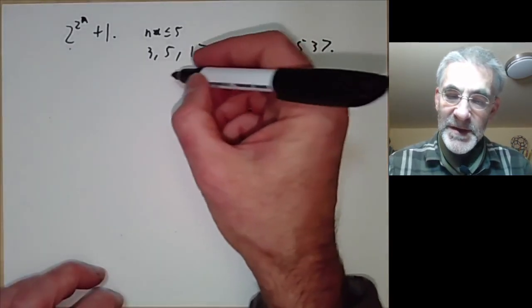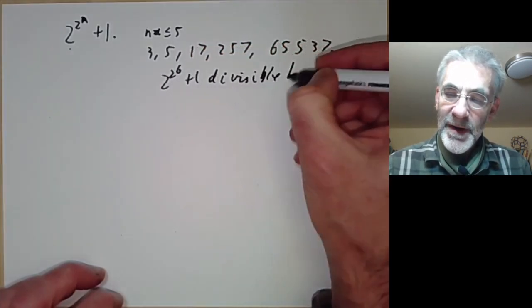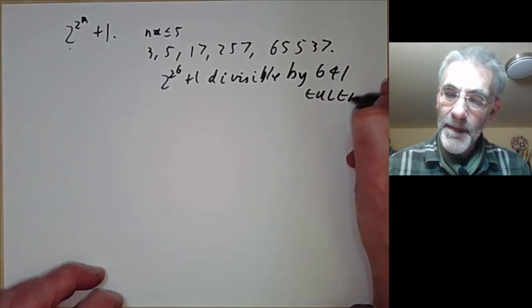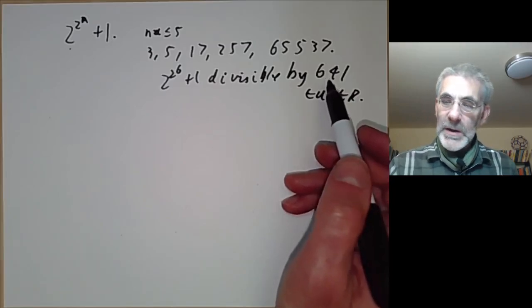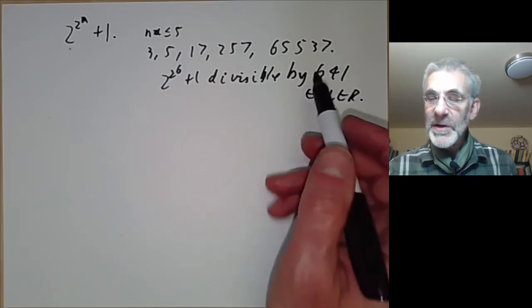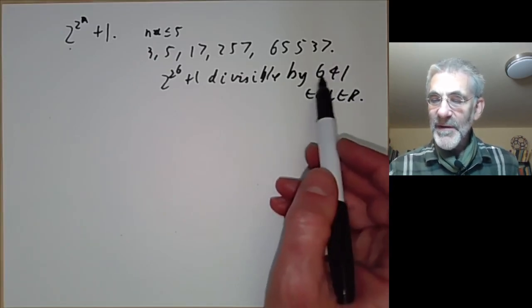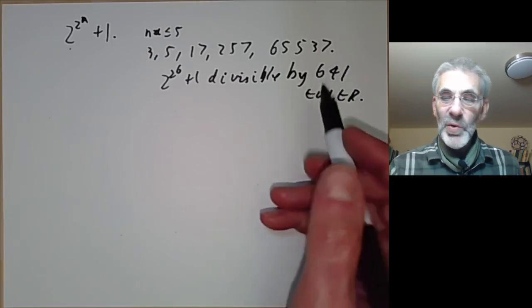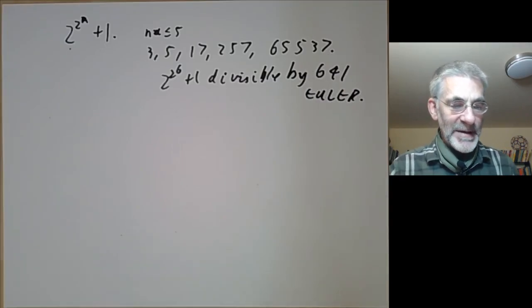So for instance 2 to the 2 to the 6 plus 1 is divisible by 641 and this factor was found by Euler. And this is actually quite impressive if you remember that Euler did not have a computer or a calculator and did all his calculations by hand. So the question is how did Euler find this factor? Well we'll be explaining a little bit more later on in the course how Euler came up with this factor by hand calculation.